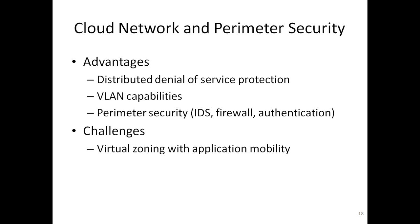The last topic is cloud network and perimeter security. As far as the organization's network security is concerned, the cloud provides a very good advantage: by its nature, cloud is distributed, so it can provide denial-of-service protection in a distributed way. It can install security controls throughout the network and prevent DoS and DDoS attacks. It also provides virtual LAN capabilities and perimeter security using intrusion detection systems, intrusion prevention systems, firewalls, and authentication.